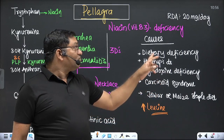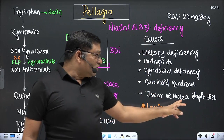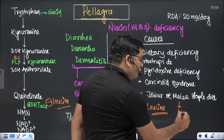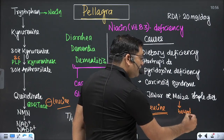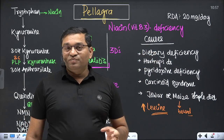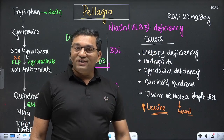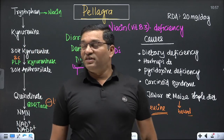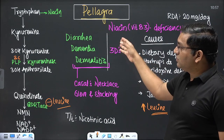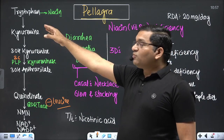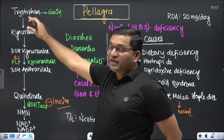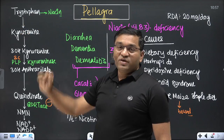In maize, niacin is present in bound form and is not available for absorption, which can also cause niacin deficiency. In chronic alcoholics, there is decreased absorption of niacin, which is another cause. To recap: 60 milligrams of tryptophan gives 1 milligram of niacin, and only 10% of niacin requirement is provided from the essential amino acid tryptophan.